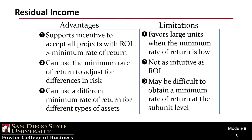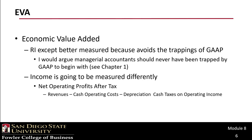Our next performance measure is EVA, or Economic Value Added, which is a trademarked type of measurement. EVA is just like residual income, except it does a better job of measuring because it avoids some of the trappings of generally accepted accounting principles. Managerial accounting is not about external financial statements, so income is measured differently using net operating profits after tax: revenues minus cash operating costs minus depreciation minus cash taxes on operating income.